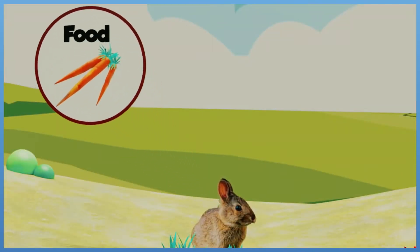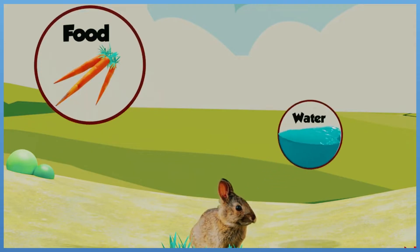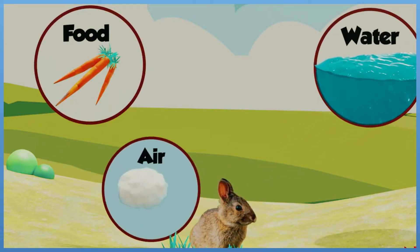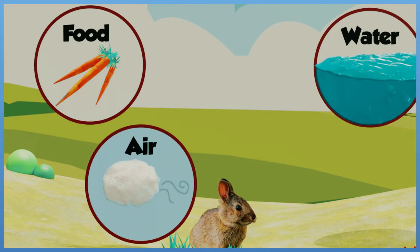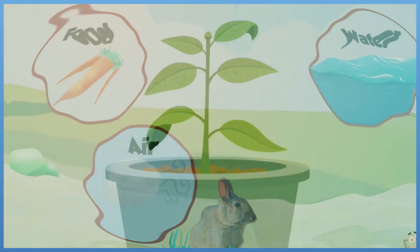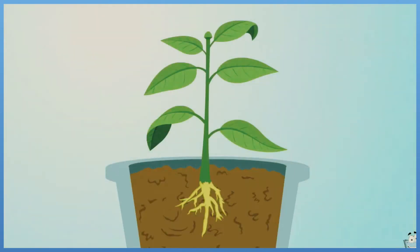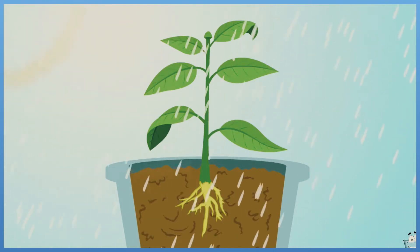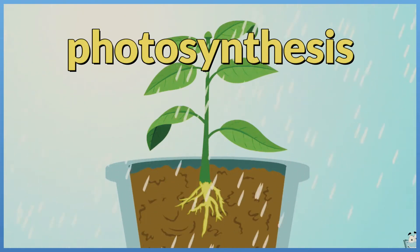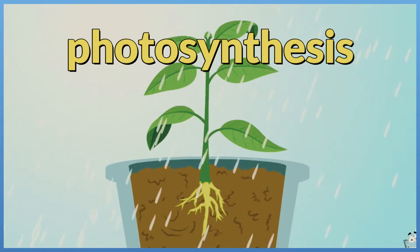Humans and other animals need to eat food to gain energy and nutrients to live and grow. Most plants get nutrients from soil and make their own food through a process known as photosynthesis, which takes place in the plant leaves.